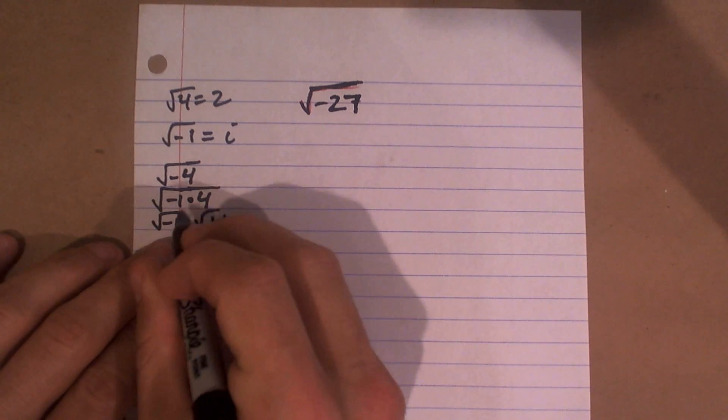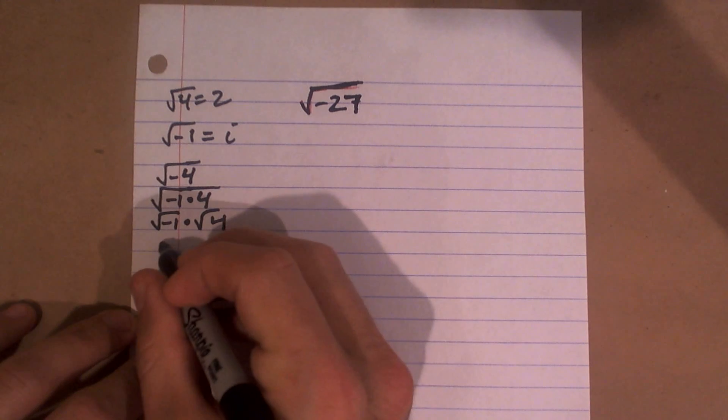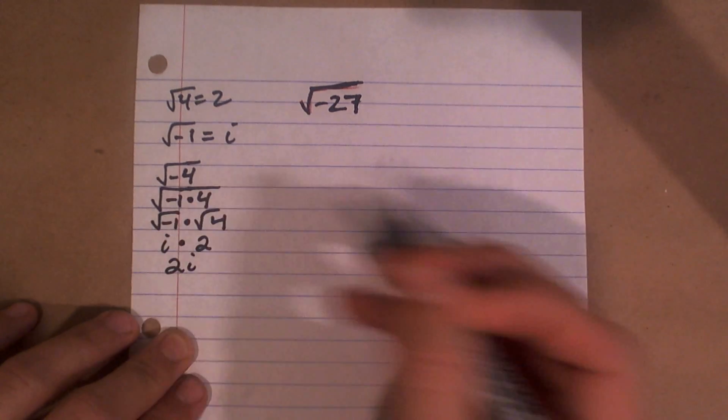The square root of 4 is 2, and the square root of negative 1 we're representing as i. So therefore this would be i times 2, or 2i.